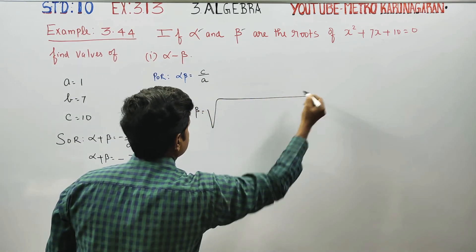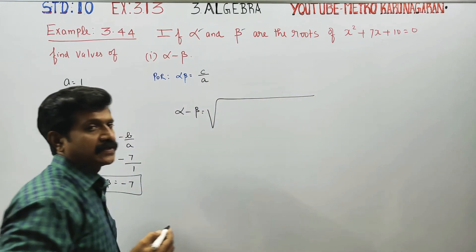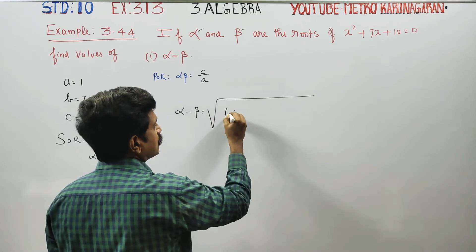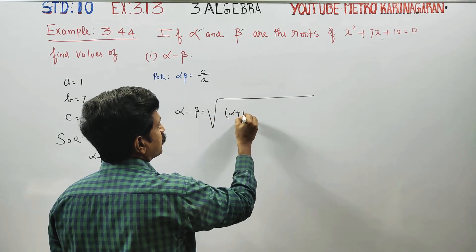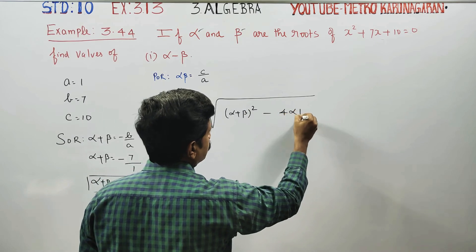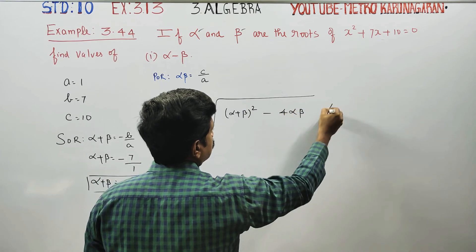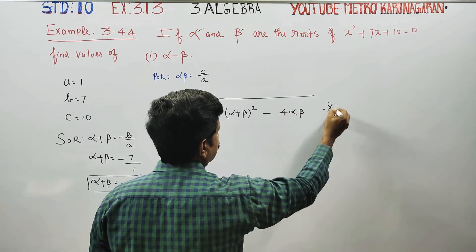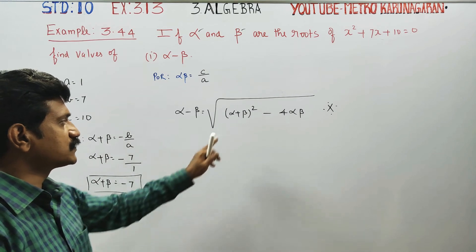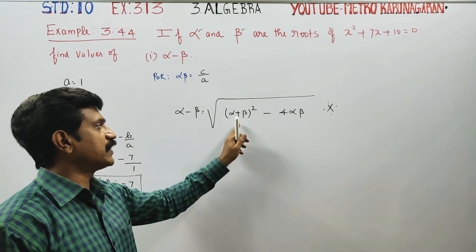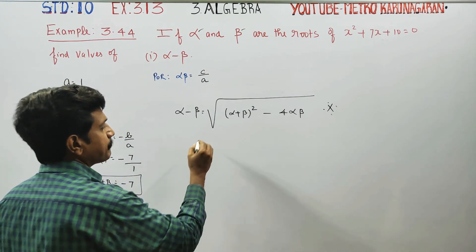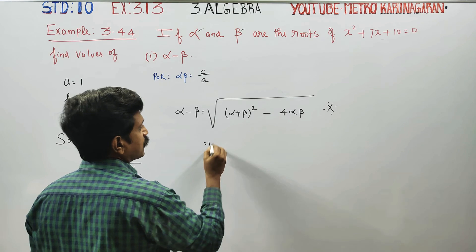Direct formula: alpha minus beta is equal to the square root of (alpha plus beta) squared minus 4 times alpha into beta.